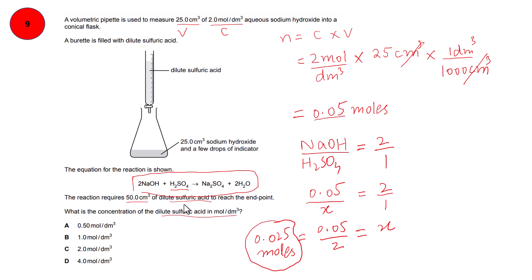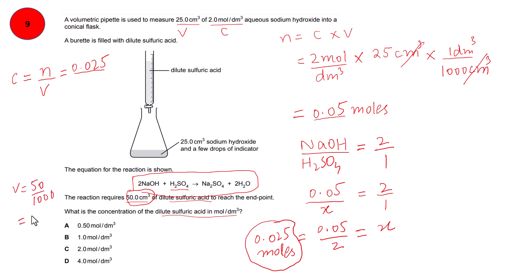Now find the concentration of sulfuric acid: concentration = moles / volume. Moles of H2SO4 = 0.025. Volume = 50 cm³ = 50/1000 = 0.05 dm³. So concentration = 0.025 / 0.05 = 0.50 mol/dm³.